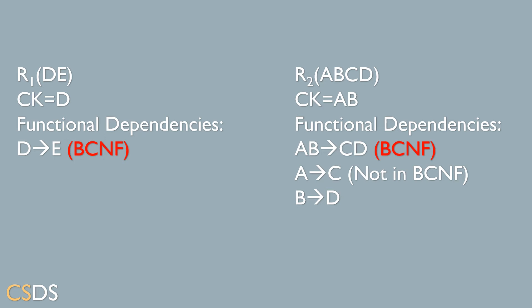We'll check each sub-relation and find its candidate key. In R1, the functional dependency is D→E. We can see that D is the candidate key of the relation, so D→E is in BCNF, meaning the relation DE holds BCNF and we do not need to decompose it further.